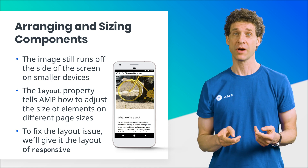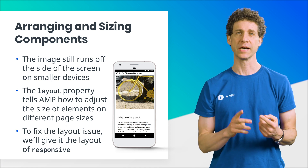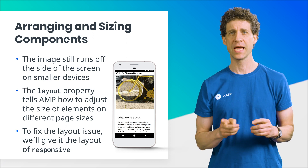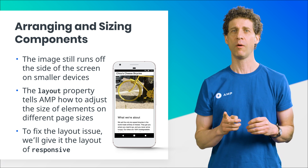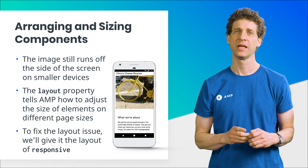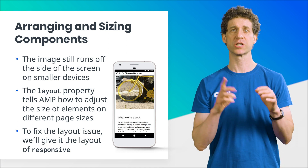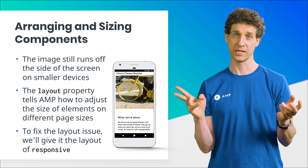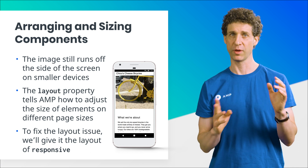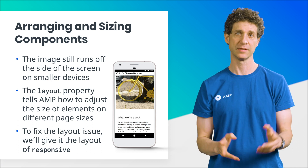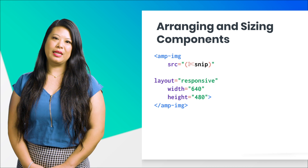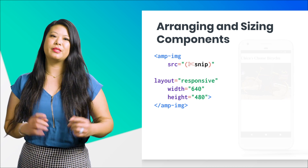This makes the image automatically scale when the window resizes. The image will assume the dimensions of the parent container, all while respecting the original aspect ratio. In other words, as its container shrinks or expands, so will our image, while keeping the same ratio of width to height. If you add the layout attribute to the image correctly, the image will now look like this.